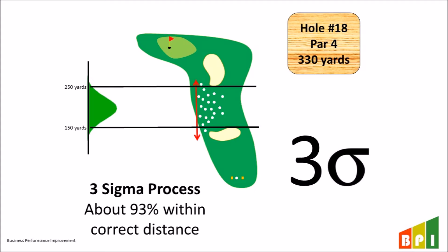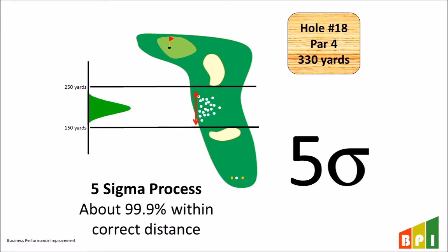Here is a four sigma process. We are getting even better, with 99% of the tee shots falling within the limits, and the variation is much smaller. As we mentioned earlier, we should be striving to hit 200 yards with the least amount of variation. A five sigma process is now into the high 99% chance of success. We are starting to create a buffer between the process variation and our limits, which allows us to stay away from the limits and allow for other variables to come into the process without pushing ourselves outside of the limits.